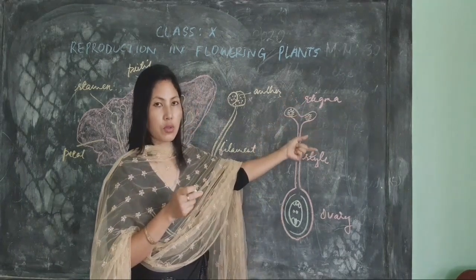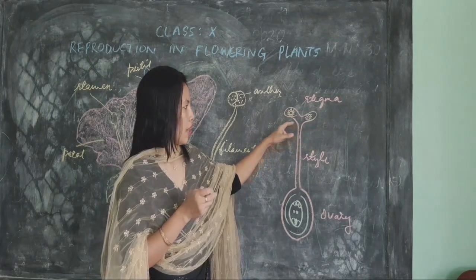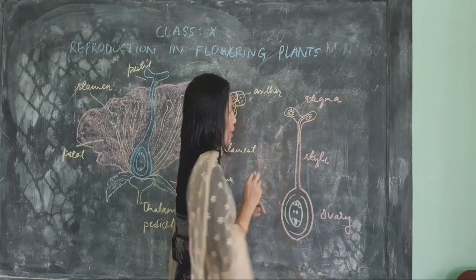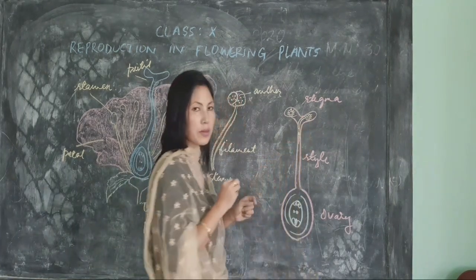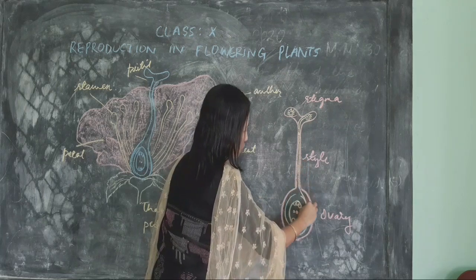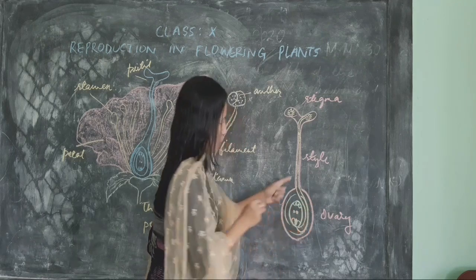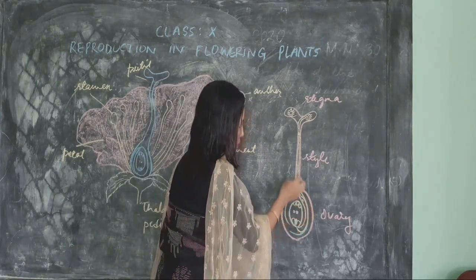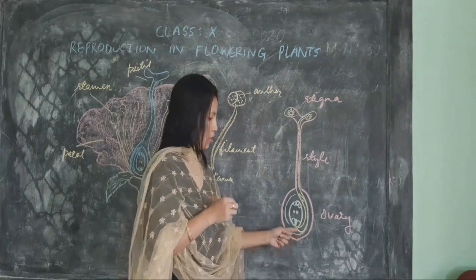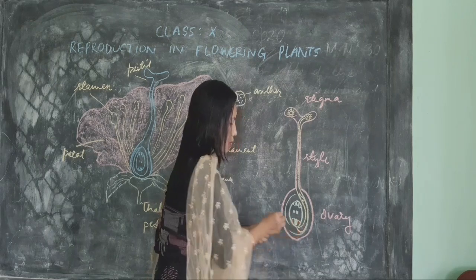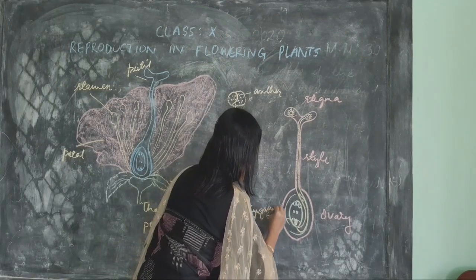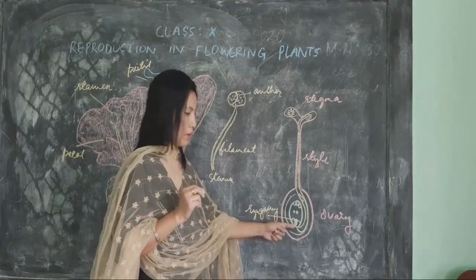When the pollen grain falls on a suitable stigma, it will start to germinate. Along the germination, it will produce a pollen tube which grows down toward the ovary. Along the growth of the pollen tube, it will release the male gamete, which will move down and reach the egg. The fertilization of the egg with the male gamete is known as syngamy.